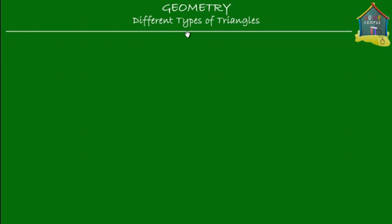Welcome to homecampus.com.sg. In this lesson, we're going to talk about a few different types of triangles: a triangle called the isosceles triangle, then a triangle called the equilateral triangle, and finally one that's called the right angle triangle. We're going to see a few very interesting things about those triangles. So first of all, let's see what an isosceles triangle is.